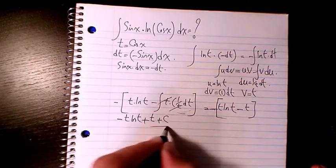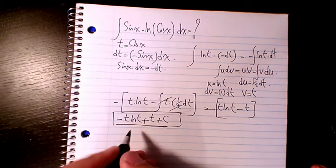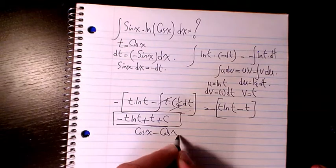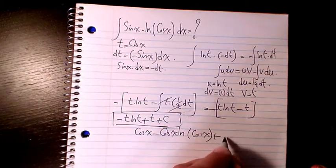Then t is cosine x, so it's going to be cosine x minus cosine x ln(cosine x) plus c.